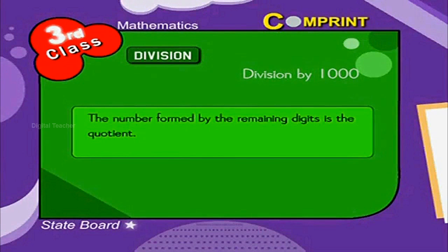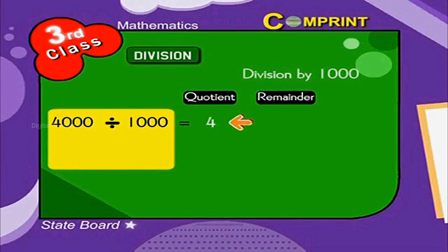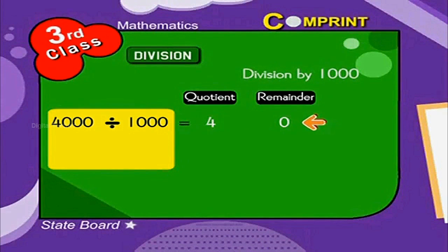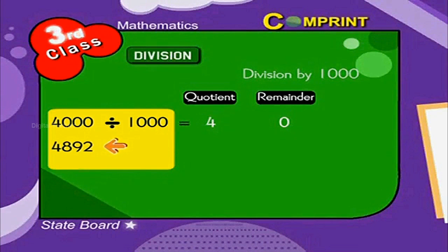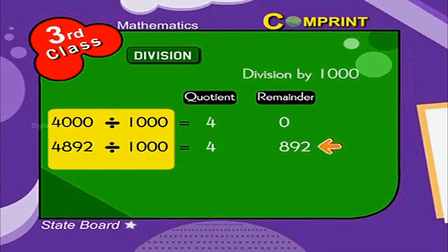Look at the example. 4000 divided by 1000 is equal to 4 as quotient and 0 as the remainder. In the number 4892 divided by 1000, 4 is the quotient and 892 is the remainder.